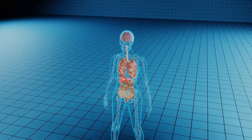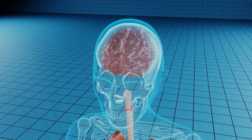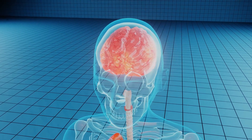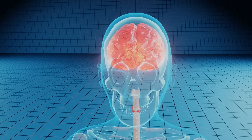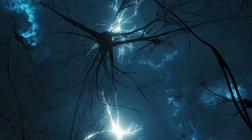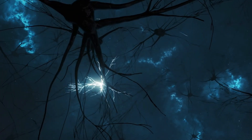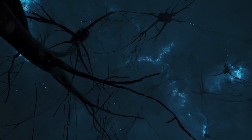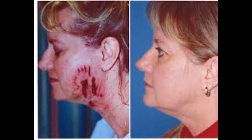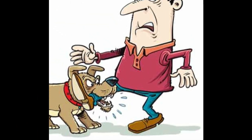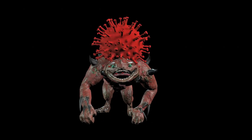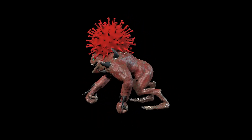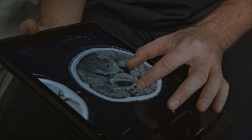Lyssavirus, however, prevents your neurons from producing interferons, making it almost undetectable by your immune system. Unlike many other viruses, it does not kill the host as it replicates, avoiding the attention of security systems. Instead, it sneaks up on you, hopping from neuron to neuron. Many factors — such as whether the bite occurred on your face or foot, or how many viruses were injected — play a role in how long this phase lasts. Lyssavirus is a relentless monster whose ultimate target is your brainstem.